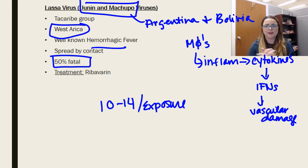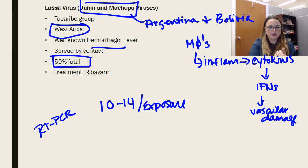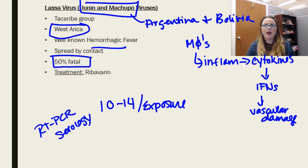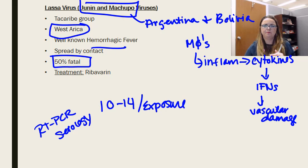To diagnose it, you're basically going to do RT-PCR, like most RNA viruses. You can do serology, but that won't account for if somebody had contracted it earlier. Throat specimens and urine can yield arenavirus if you want to try to isolate it. When handling any of these body fluids, you're going to want to use level four biocontainment, because it's very infectious.